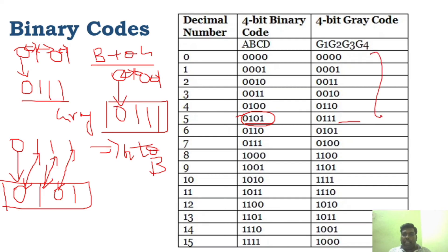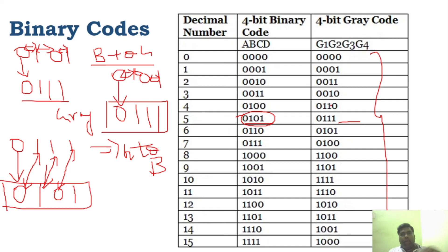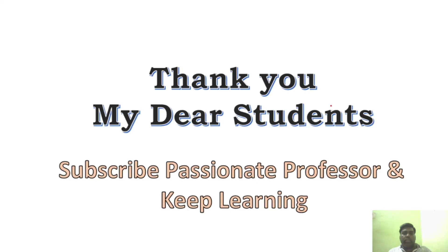Like that, you can convert binary to grey code and grey code to binary. This can be asked in 4-mark questions where any particular number is given and you need to convert binary to grey code and grey code to binary. Today we have seen what grey code is, its application in analog to digital conversion, and the simple XOR-based conversion steps.